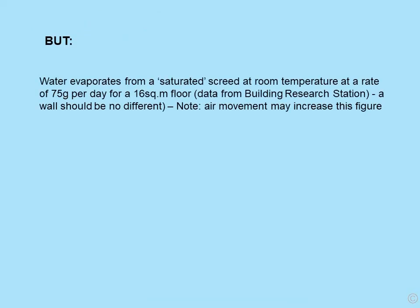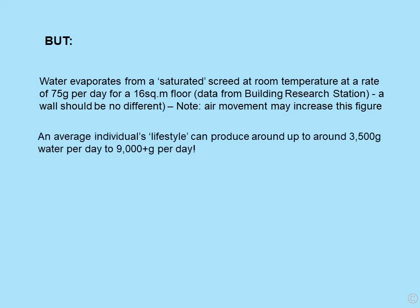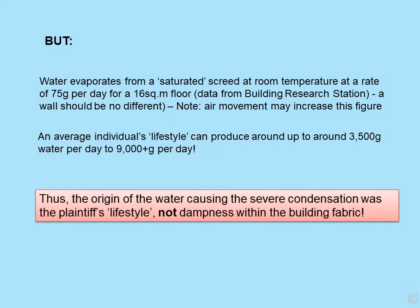Water evaporates from a saturated screed at room temperature at a rate of 75 grams per day for a 16-square-metre floor — that's data from the Building Research Station. In reality, a wall should be no different. An average individual's lifestyle — i.e. by occupation — can produce around 3,500 grams up to 9,000 plus grams of water per day. Huge amounts of water compared with what could be lost from saturated screeds or walls. Thus, the origin of the water causing the severe condensation was simply the plaintiff's lifestyle — the water she was producing from occupation — and it was absolutely nothing to do with dampness within the fabric of the building.